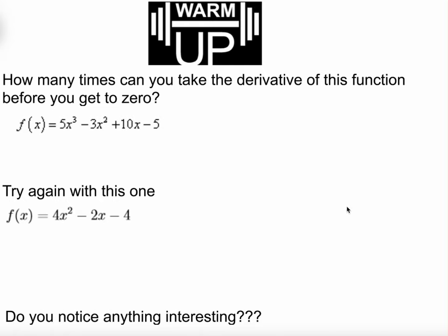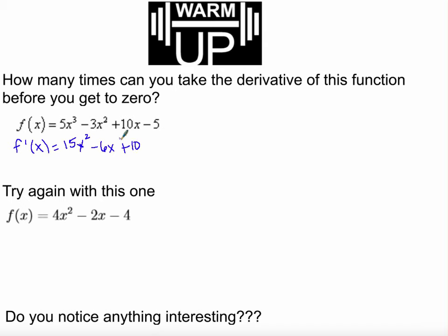So let's take this polynomial here, 5x cubed minus 3x squared plus 10x minus 5, and let's try taking the derivative. How many times can we do that before we get to zero? The first derivative, when we take the derivative once, will give us 15x squared minus 6x to the first power plus 10, and of course the derivative of a constant is zero. So we've taken the derivative once, but I don't have zero. So let's try it again.